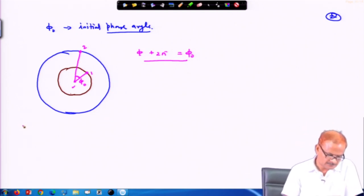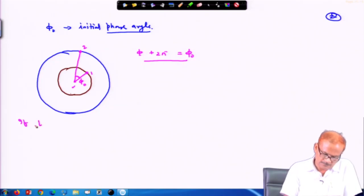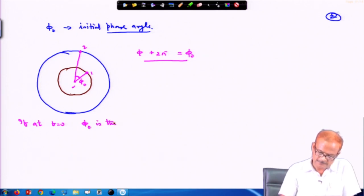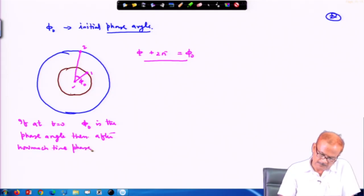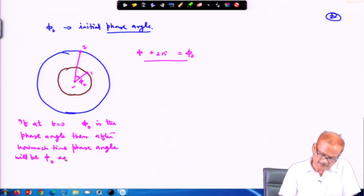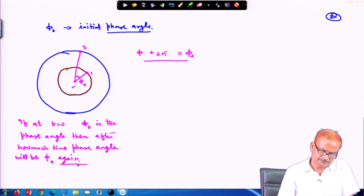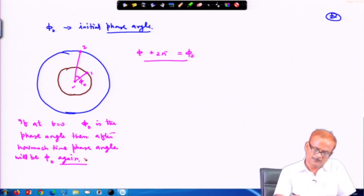The question is: φ + 2π = φ0 — when will this occur? In other words, if at t = 0 the phase angle is φ0, then after how much time will the phase angle be φ0 again? Here φ0 indicates the phase of planet 2 with respect to planet 1 initially.